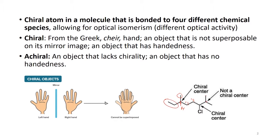On the other hand, I could see that this carbon is attached to a methyl here and to another methyl here. It is also attached to a hidden hydrogen and to CH2CH2CHCl. This will make it non-chiral, because now I have two similar groups attached to the same carbon atom.